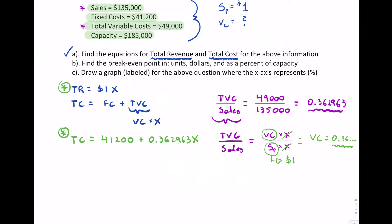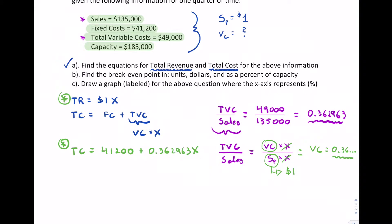To summarize part a: if you choose one dollar as the selling price, all you have to do is find the ratio between total variable costs and sales. That was part a.